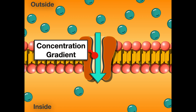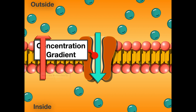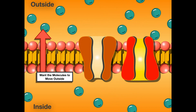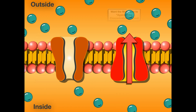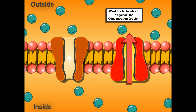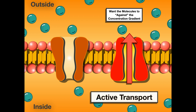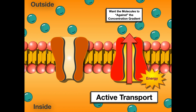The concentration gradient is moving toward the inside of the cell, so the molecules will naturally diffuse into the cell. But I want the molecules to move outside of the cell — I want to change the parameters. To do this, I'm going to use a process called active transport to move the molecules against the concentration gradient. Active transport requires energy — it's like paddling up the river — and it allows me to pump those molecules out against the concentration gradient.